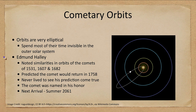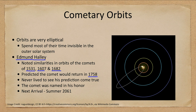Most of the time a comet is invisible, only visible when it comes close to the sun. Edmund Halley was researching comets and noted similarities in the orbits of comets that appeared in 1531, 1607, and 1682. He made the prediction that this comet would return in 1758, and while he never lived to see this prediction come true, the comet did appear toward the end of that year and was named in his honor.